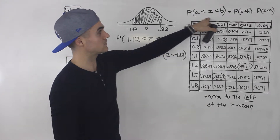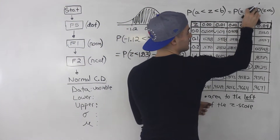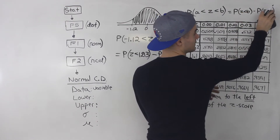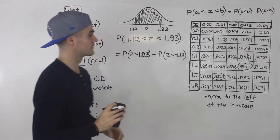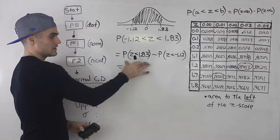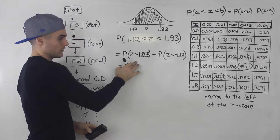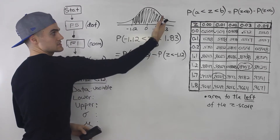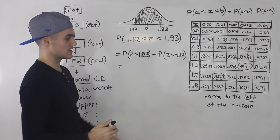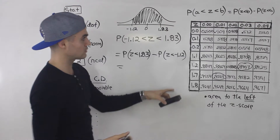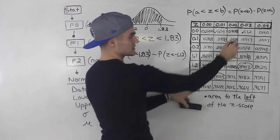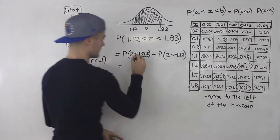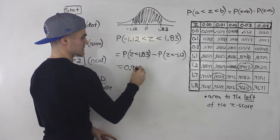Let's work out each part. First, the probability that z is less than 1.83: that's a positive z-score and we want the area to the left, so we can use the table right away. Looking up 1.8 with a second decimal place of 3, we get 0.9664. So this first part equals 0.9664.